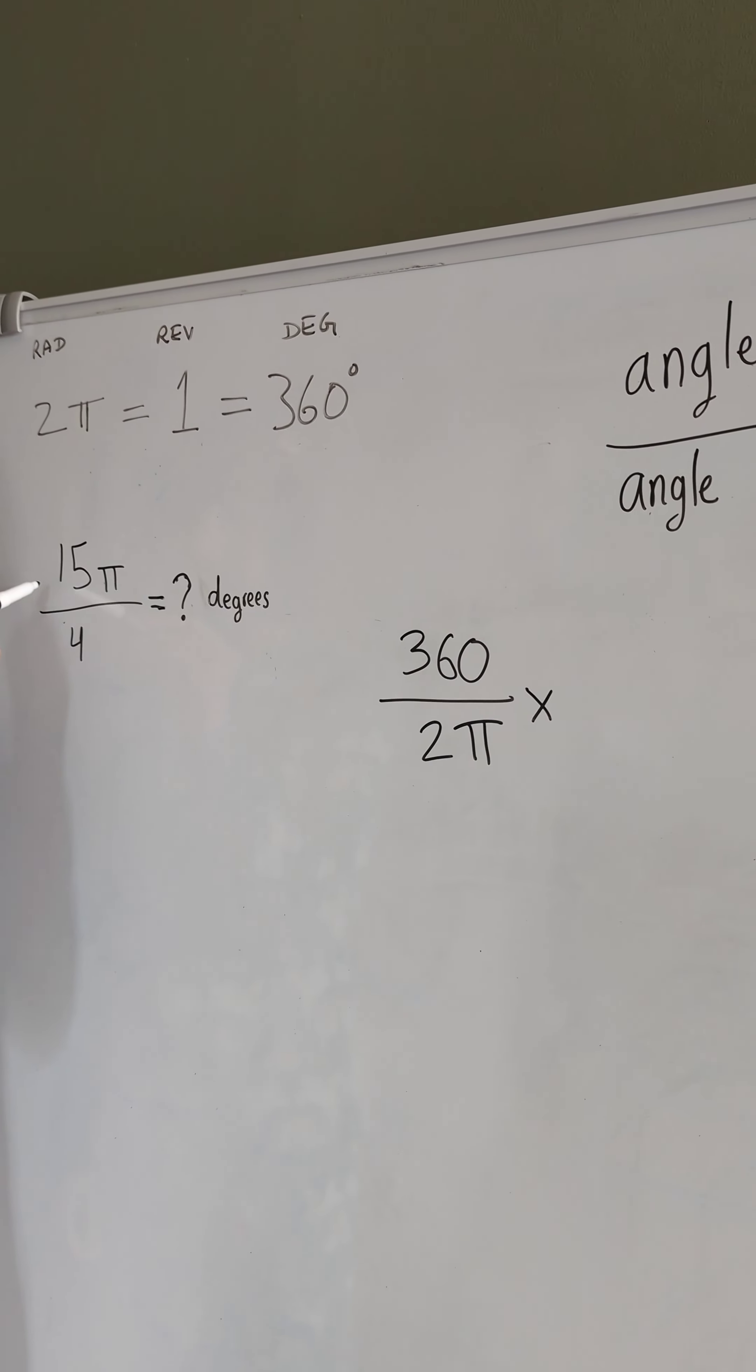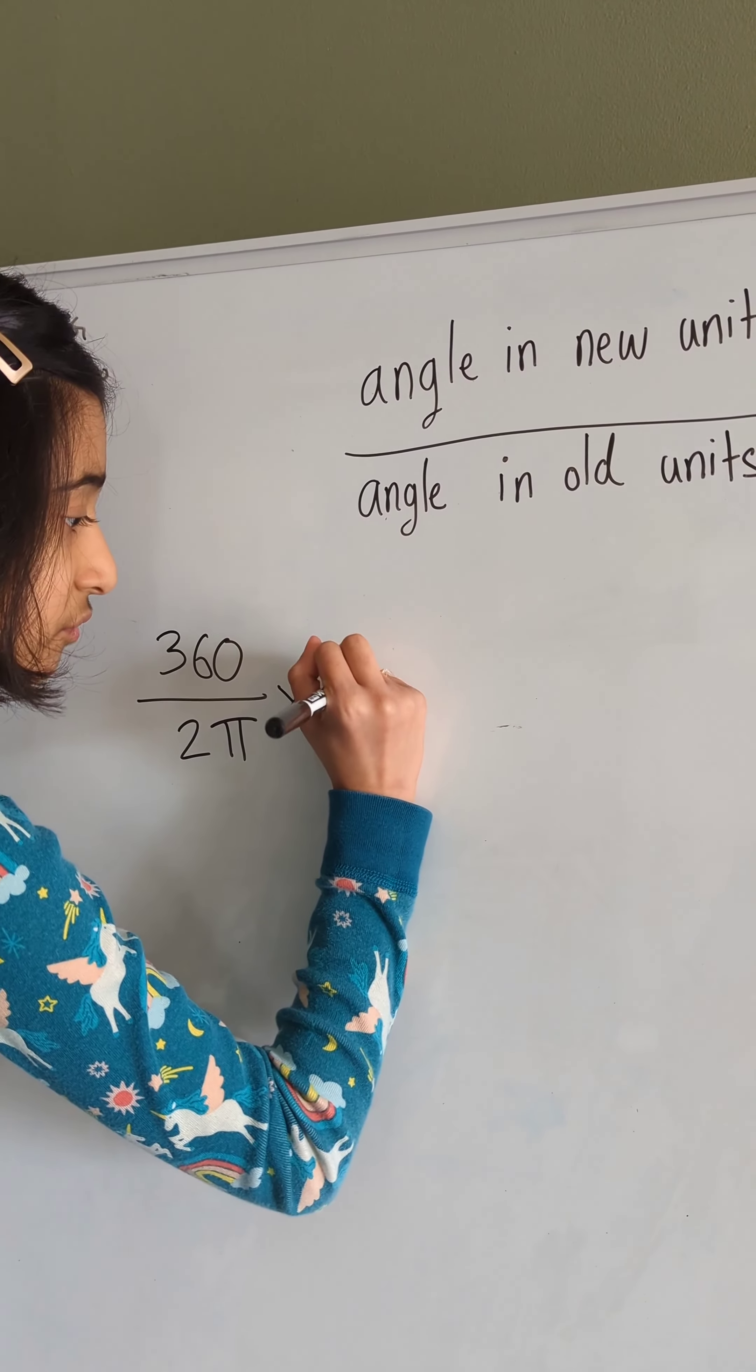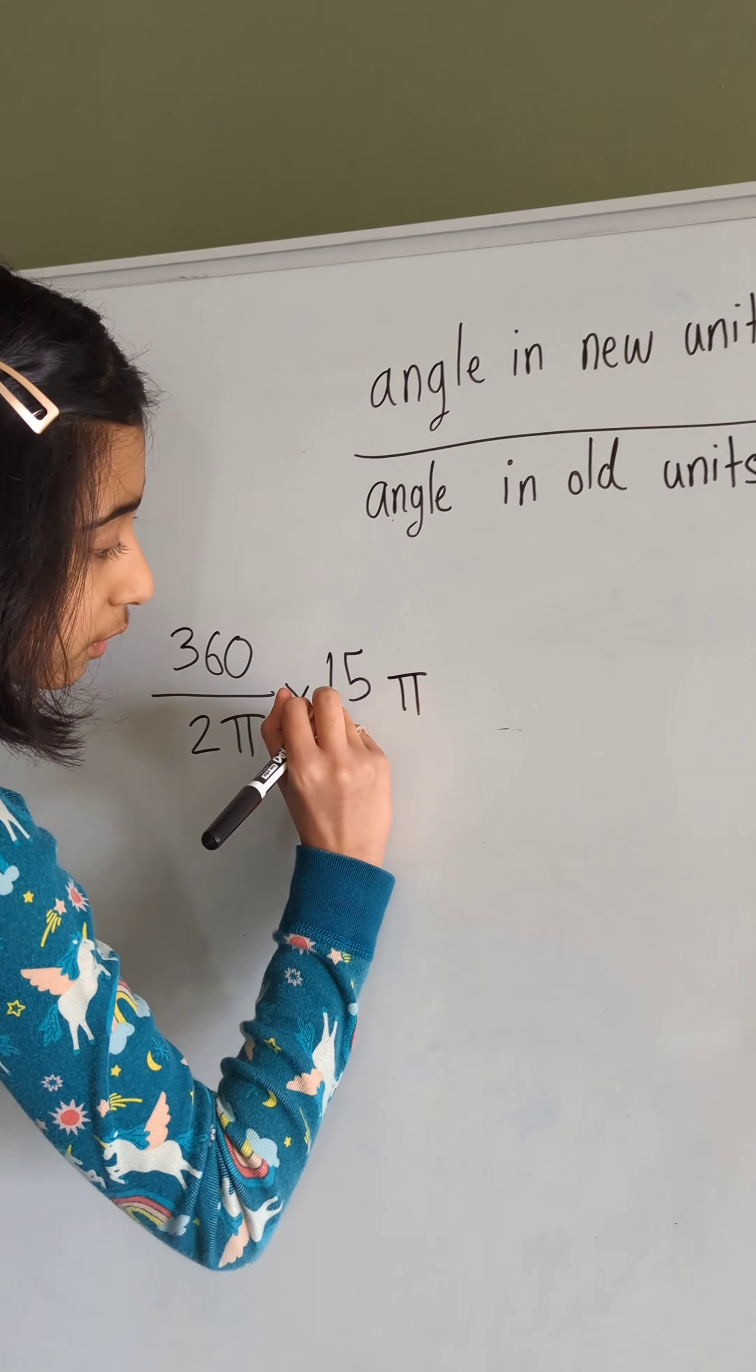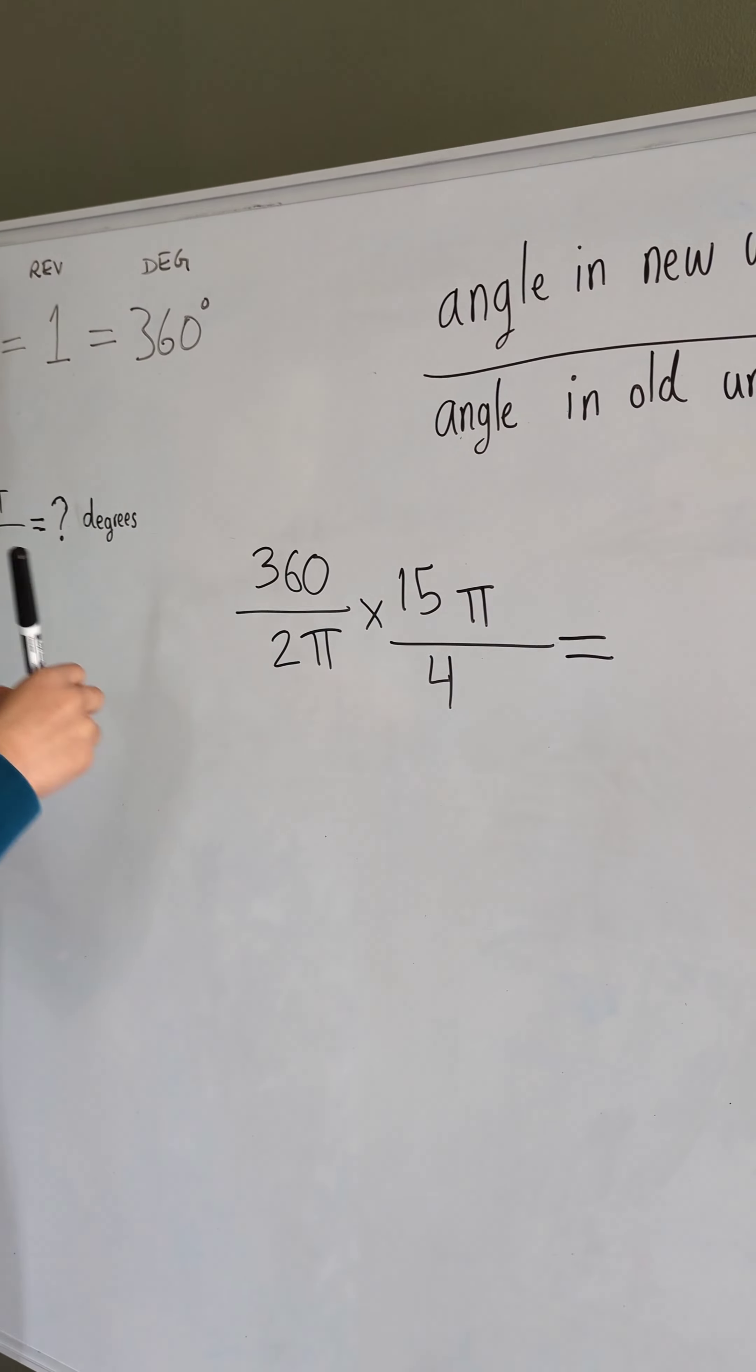360 divided by 2 pi times the given measure. In this case, the given measure would be 15 pi by 4, so times 15 pi by 4 equals... Now, we need to solve it.